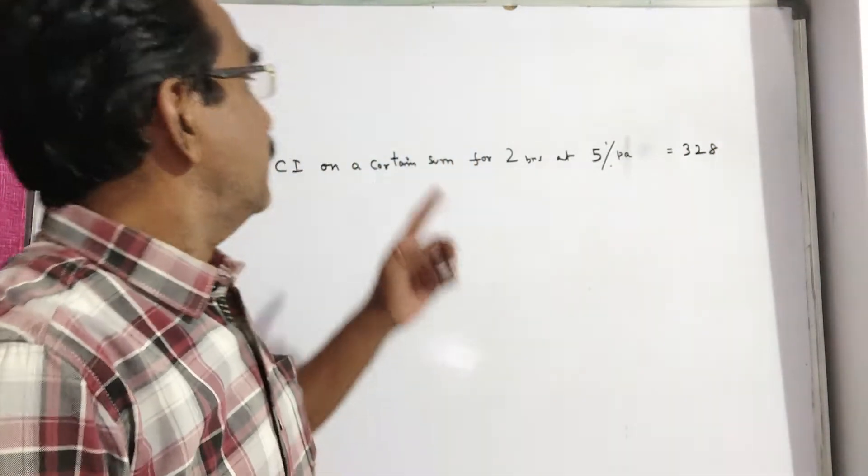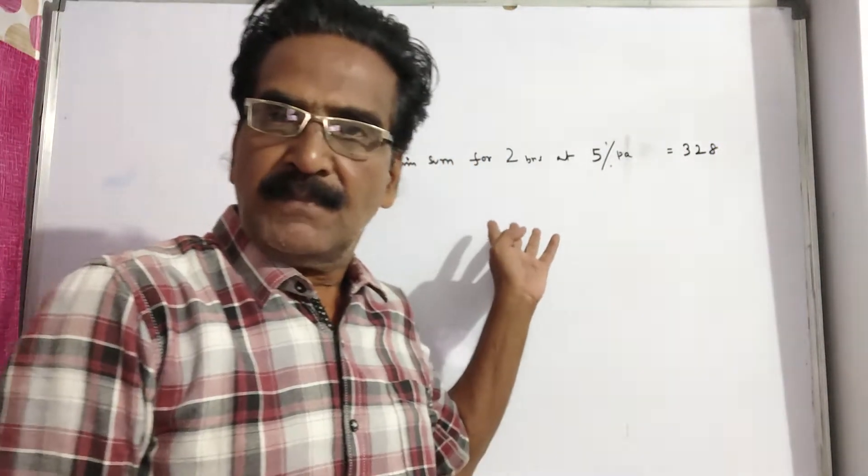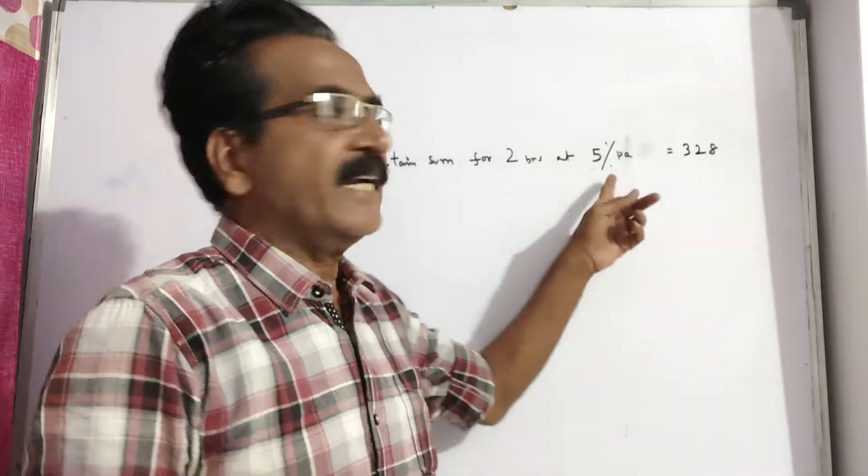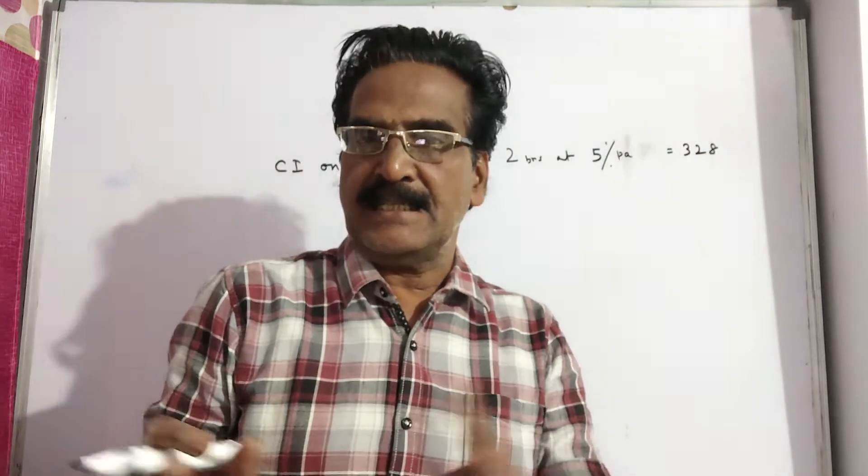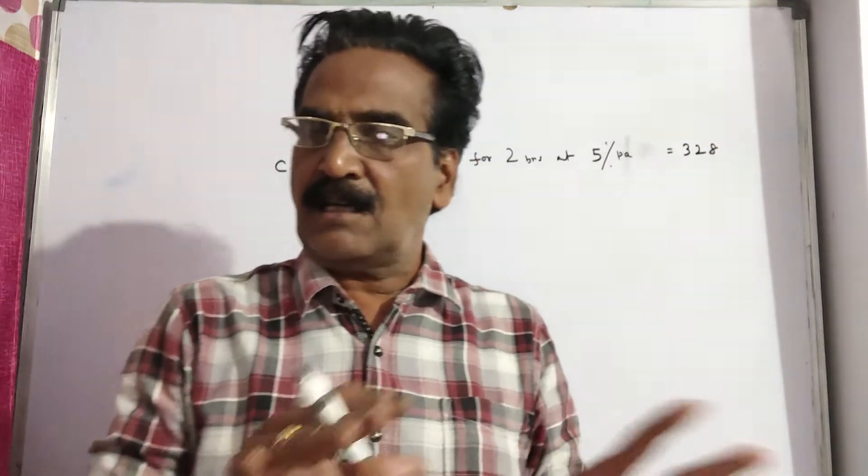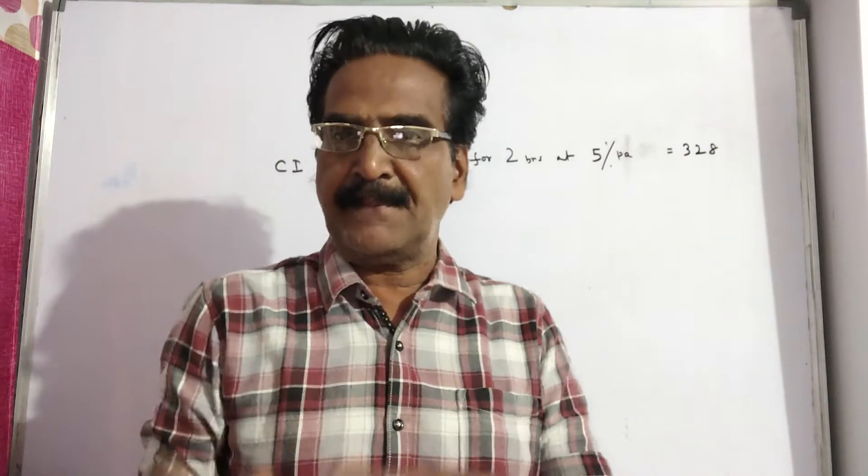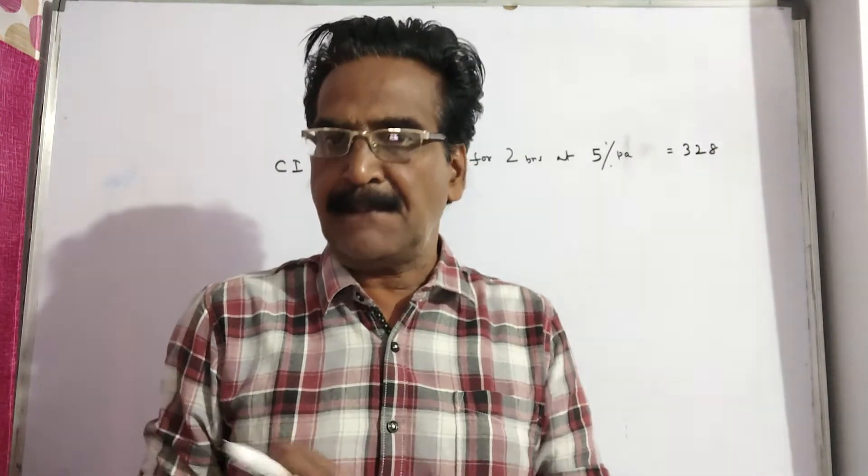See friends, the compound interest on a certain sum for 2 years at 5% per annum is Rs. 328. Then what is the simple interest on the same sum at the same rate of interest and for the same period?